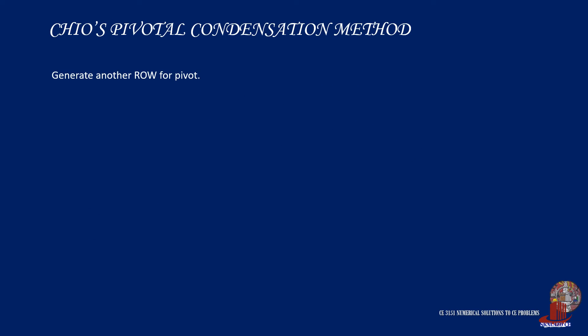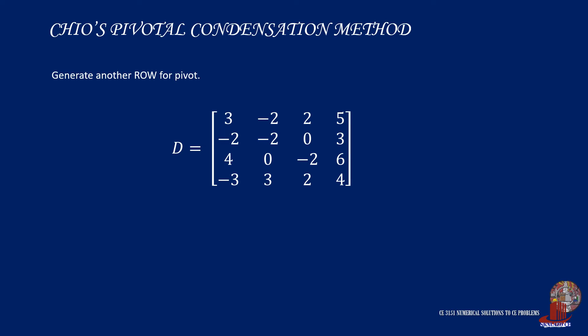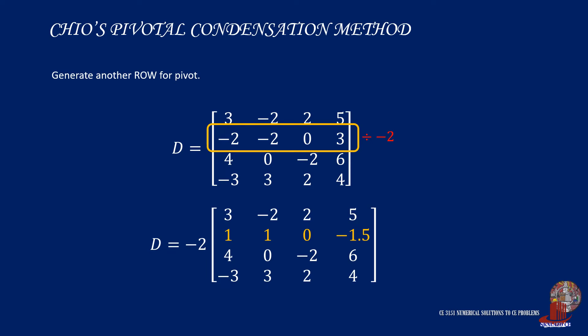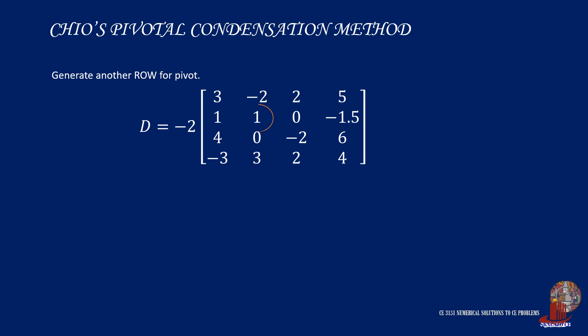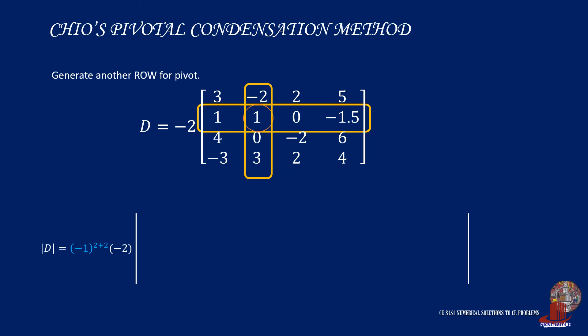Another option to start a computation is to use row 2. Divide each element by negative 2, which would give 1, 1, 0, and negative 1.5. Since we already have 1 in the matrix, we can do the condensation. Let's choose element at position 2, 2. By focusing on element 2,2, we highlight the second column and second row for the reflected factors. The remaining elements are used in the reduced form. The scalar for this matrix has the constant negative 1 raised to the indices 2 plus 2, then the extracted factor, which is negative 2.